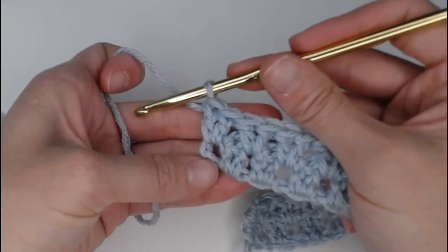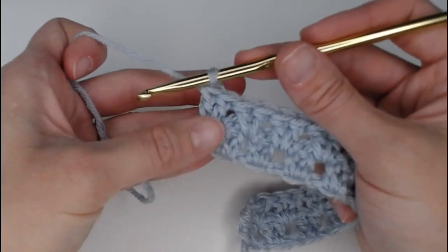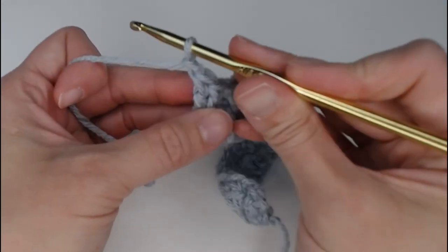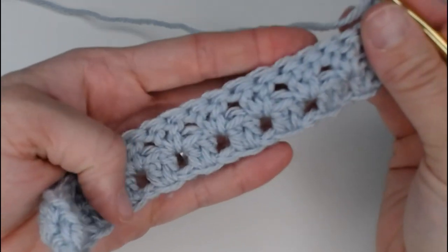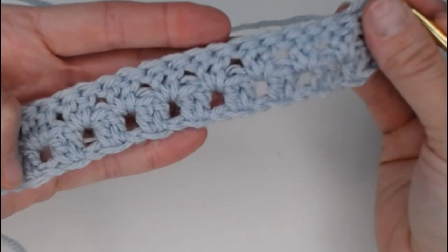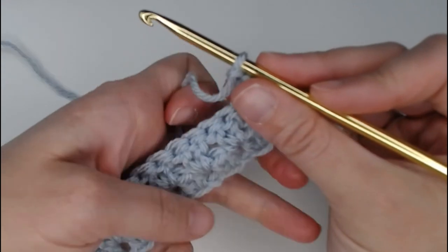Perfect guys! So it will look something like that. Great! So we are going to chain 1, turn our work. Look at that. Isn't that pretty? Okay, let's go ahead and do row 3 together.